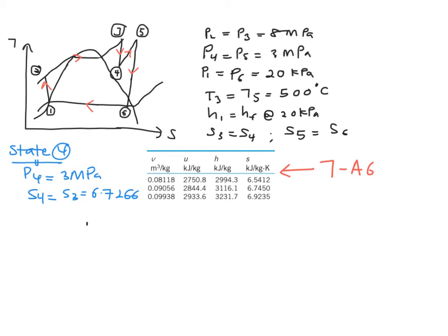So when you do the interpolation, the one that you are looking for is your H value, which in this case is your H4. And you are going to equate it with your S, which in this case is equal to 6.7266.